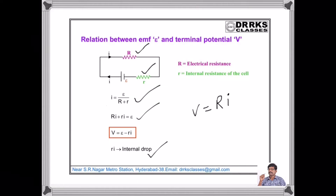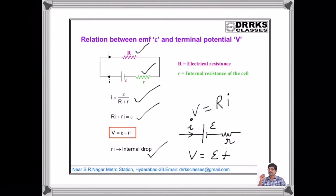When the battery is being charged, that is when current I is entering into the cell, the terminal voltage V = E + rI.